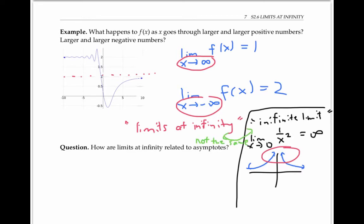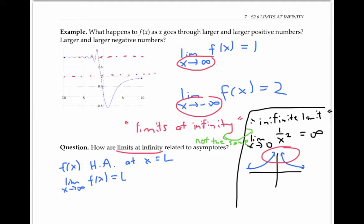So how are limits and infinity related to asymptotes? A limit at infinity is pretty much the same thing as a horizontal asymptote. f of x has a horizontal asymptote at y equals L means that the limit as x goes to infinity of f of x equals L, or possibly that the limit as x goes to negative infinity of f of x is L, or both, as you can see in the example above.